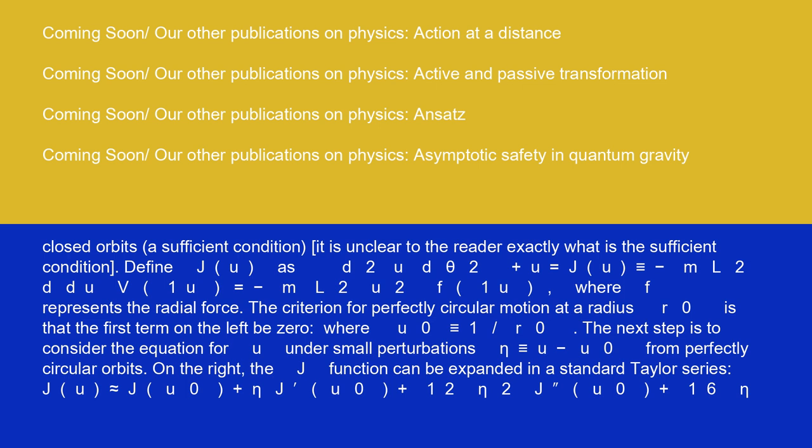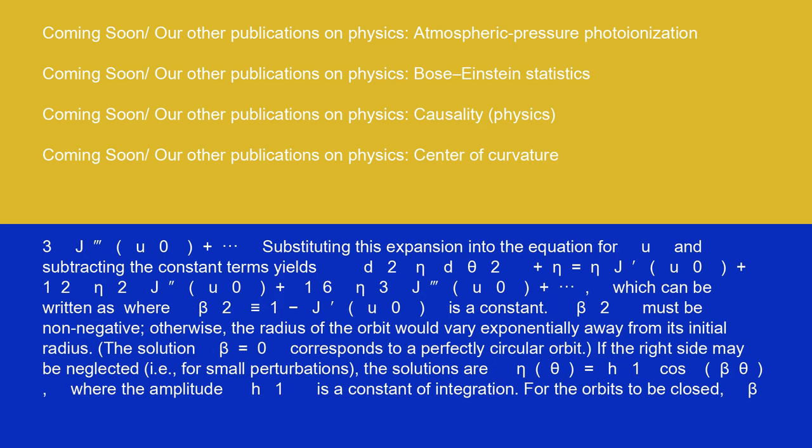On the right, the J function can be expanded in a standard Taylor series: J(u) is almost equal to J(u₀) plus η J'(u₀) plus (1/2)η² J''(u₀) plus (1/6)η³ J'''(u₀) plus midline horizontal ellipsis, which can be written as where β² is identical to 1 minus J'(u₀) is a constant.